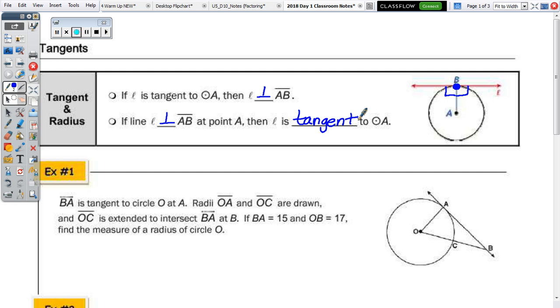So, if BA—so the length of segment BA is 15, and the length of segment OB is 17, what is the measure of a radius of the circle? Remember, your radii were OC and OA.